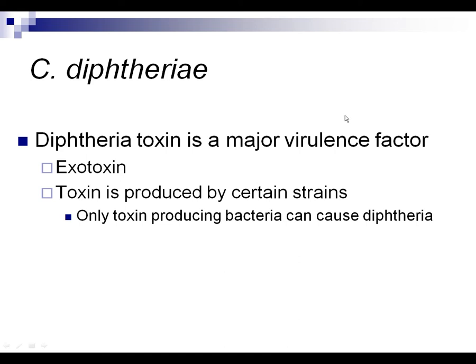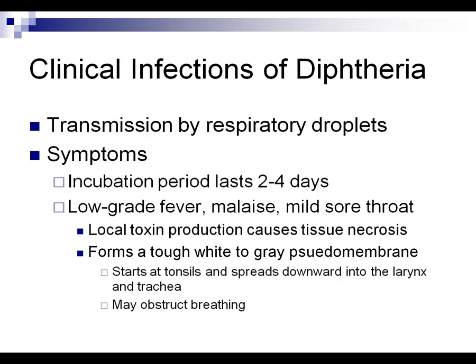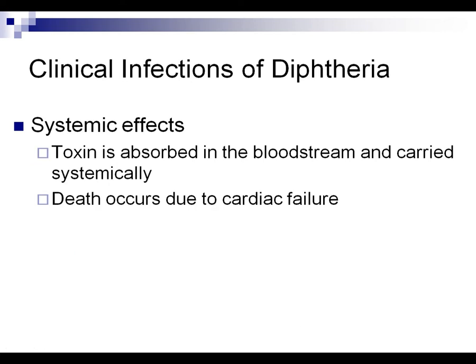One of our pathogens is Corynebacterium diphtheriae. It produces a toxin which is the major virulence factor. It often begins with flu-like symptoms and a mild sore throat, then the infection invades the tonsils and moves down toward the larynx and deeper into the respiratory system into the trachea. You can actually see obstruction in breathing because there's so much tissue death from exposure to the toxins created by this organism. The organism can also get into the bloodstream and travel to other areas of the body.